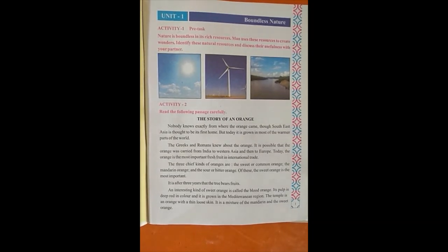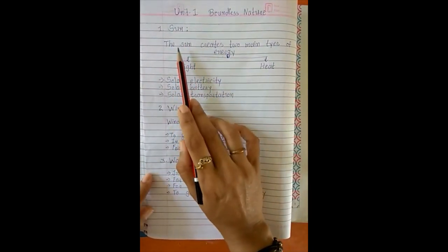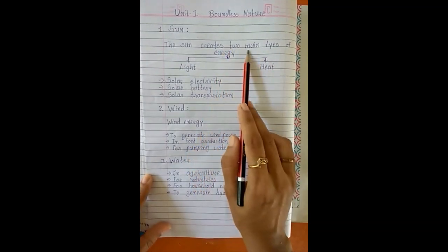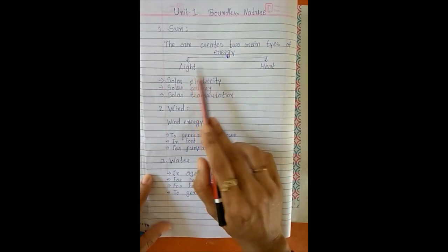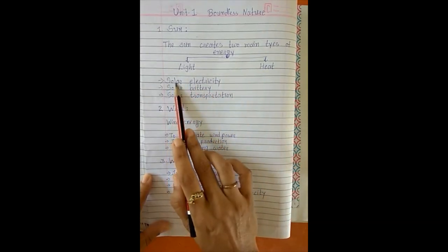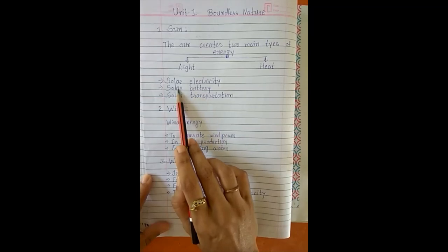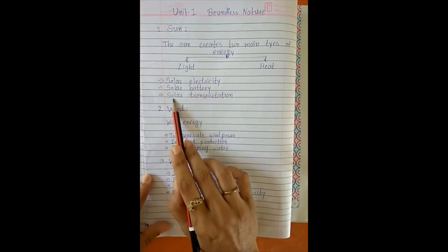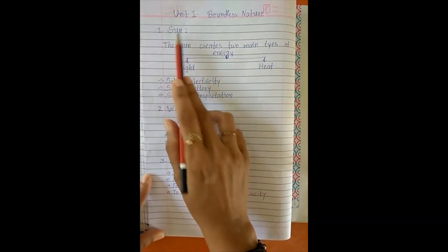The sun creates two main types of energy: light and heat. From the sun we have created solar electricity, solar battery, and solar transportation. So there are so many uses of the sun.